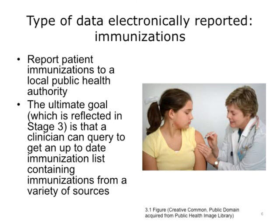Reporting immunization information to a local public health authority has been part of the Meaningful Use Program since Stage 1. The ultimate goal, which is reflected in Stage 3, is that a clinician is not only able to send immunization information, but can also query the public health authority to get a full immunization history and forecast on a patient that is created using up-to-date immunization information from a variety of sources.